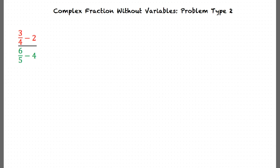So, what do we do first? First, we have to simplify the numerator and the denominator. We will start by simplifying 3 over 4 minus 2 in the numerator. We write 2 with the common denominator of 4, which gives us 3 over 4 minus 8 over 4. This can be simplified to negative 5 over 4.